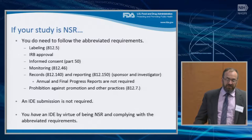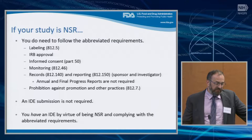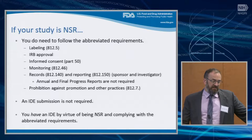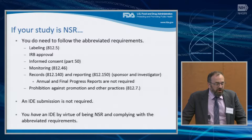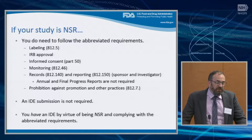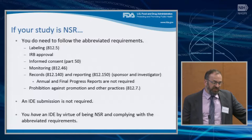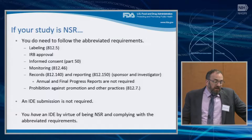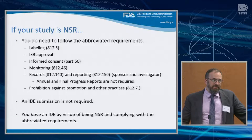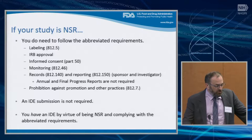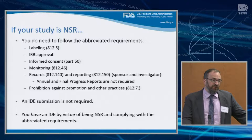If it's non-significant risk, we come back to the abbreviated requirements. A lot of them are things you don't have to send — you don't need an IDE submission, and that's always the big thing people don't want to do. You do need to follow the other abbreviated requirements. Some of them are things you would do anyway, like IRB approval, informed consent, and monitoring in many cases. We do have requirements for records and reporting, but you don't need to send annual and final progress reports. Really, the only thing you'd need to send to us would be any unanticipated adverse events, as those arise.